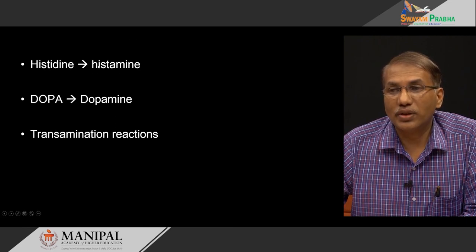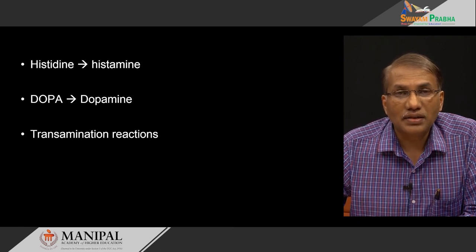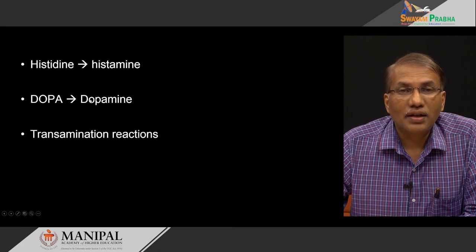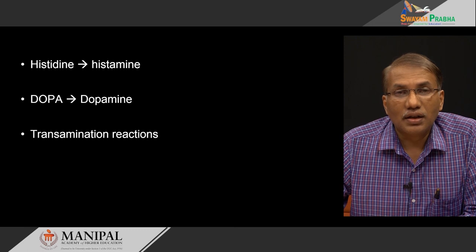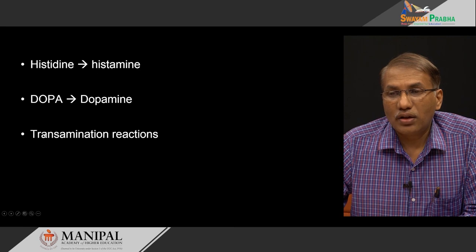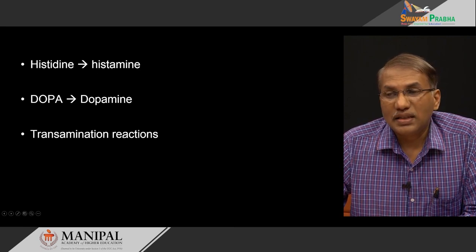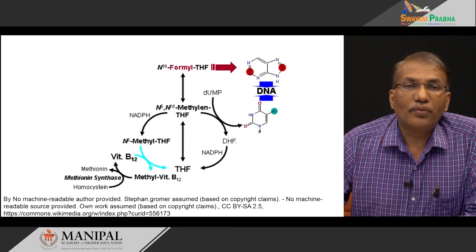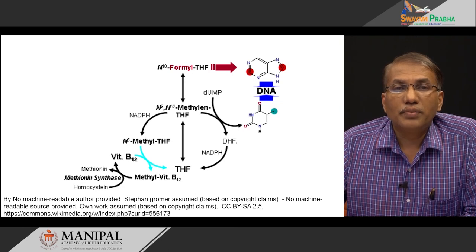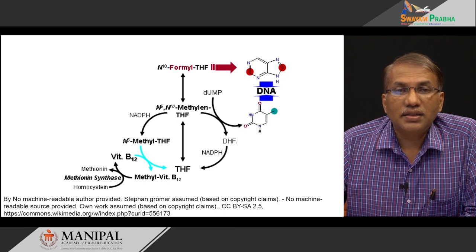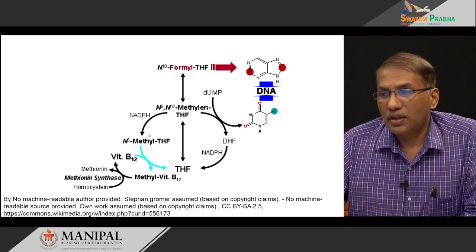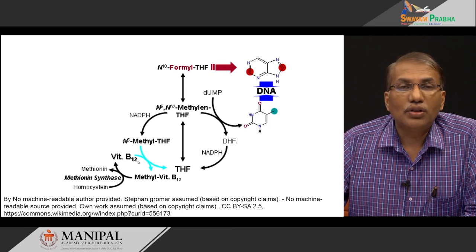Pyridoxal phosphate also plays a very significant role in neurotransmitter synthesis by decarboxylation. Two examples: histidine to histamine, which is an important mediator of allergy, inflammation and pain; and dopa to dopamine, which is a very important precursor for epinephrine and norepinephrine, the predominant neurotransmitters in our central nervous system. In addition, pyridoxal phosphate also plays a significant role in amino acid transamination reactions. Next, an important group called hematopoietic coenzymes - they synergistically help in the formation of RBCs. Vitamin B12 along with tetrahydrofolate (folic acid), where B12 is cobalamin, both together in this cyclic reaction will help in the formation of DNA.